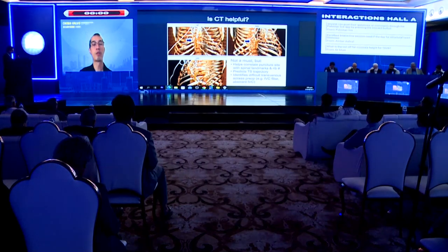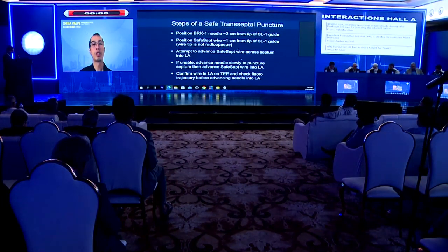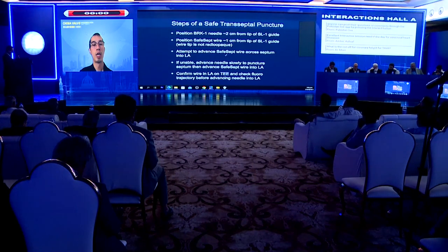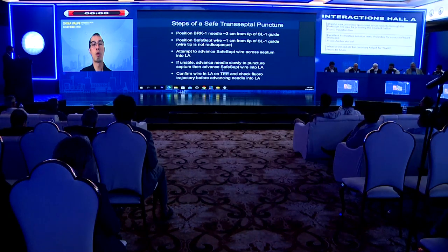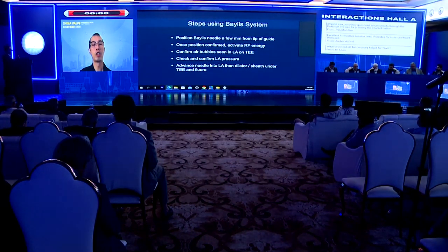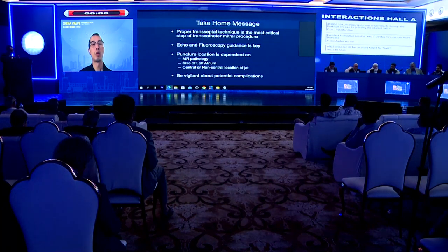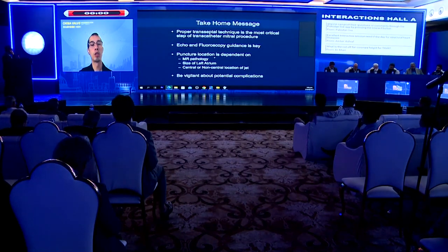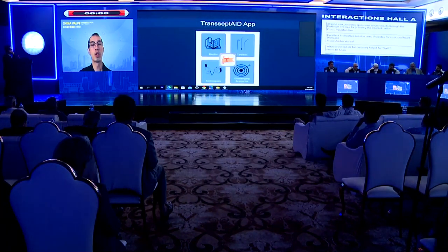CT for transeptal planning is not mandatory but is helpful in unusual anatomy such as scoliosis to assess the septal trajectory. In summary, the procedural steps are: position 2 cm from the tip, save 1 cm, perform the SafeSept step first if applicable, confirm on TEE and fluoroscopy. The Baylis system is similar and uses RF energy, with the Baylis needle being atraumatic.